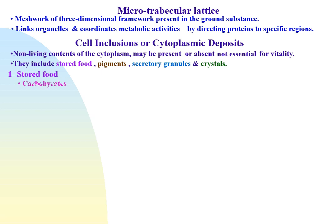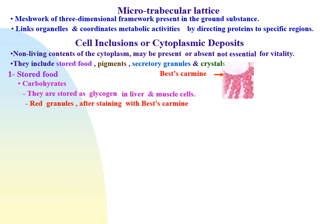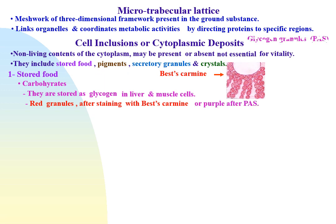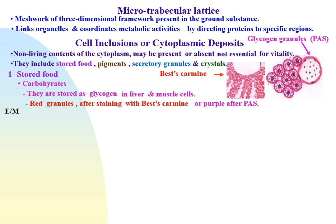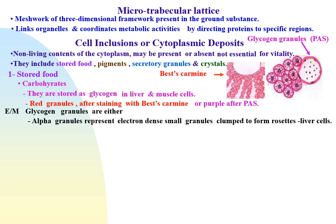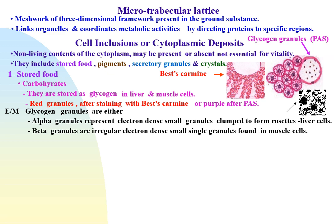Stored food — carbohydrates: they are stored in the form of glycogen, as in liver and muscle cells. They appear as red granules after staining with Best's carmine, or purple granules after staining with periodic acid-Schiff reaction. By electron microscope, glycogen granules are either alpha granules, which represent groups of very electron-dense small granules clumped to form rosettes as in liver cells, or beta granules, which are regular electron-dense small single granules found in muscle cells.